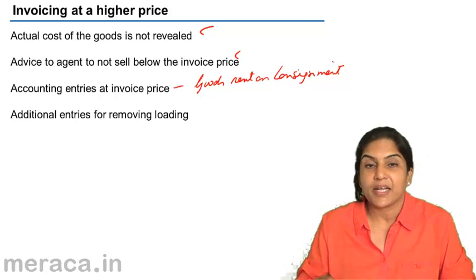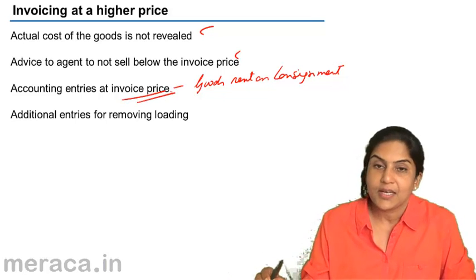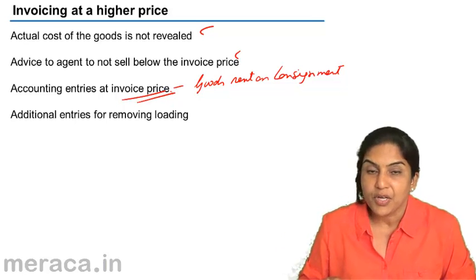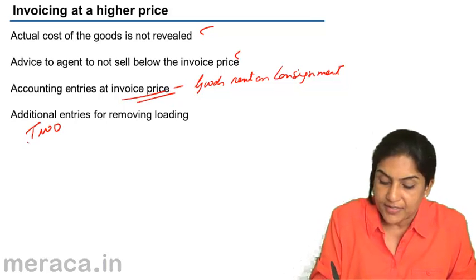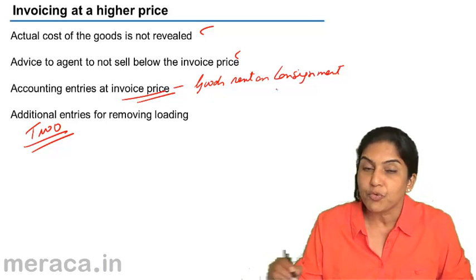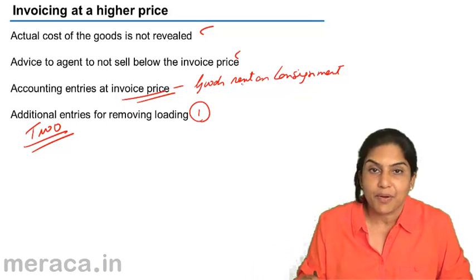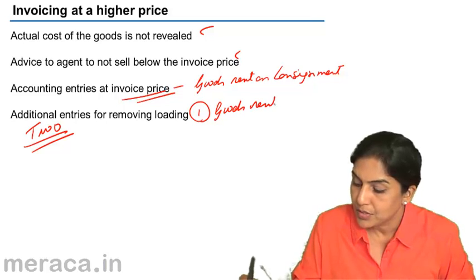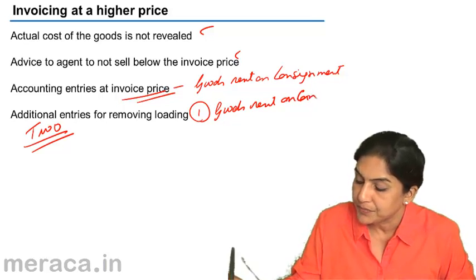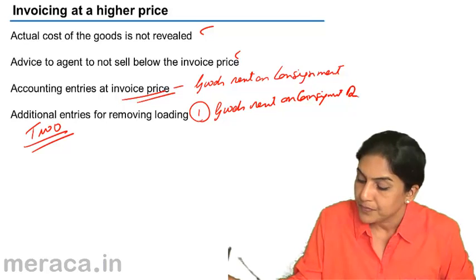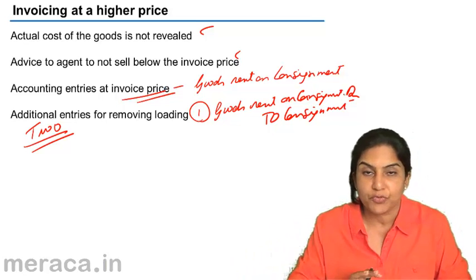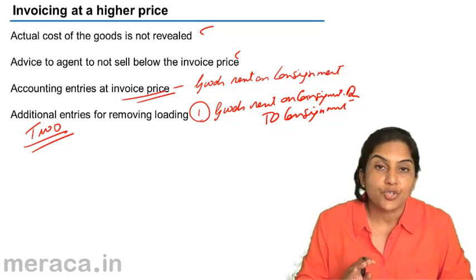Once the consignment account is prepared at the invoice price, while closing the consignment account and determining the actual profit on consignment, we pass two additional entries. One entry is to remove the effect of this loading — we reverse the above entry. When we sent the goods, we said consignment account debit to goods sent on consignment. Now we say goods sent on consignment account debit to consignment. In this manner, the effect of the loading — the higher cost — is removed, shown on the credit side, so that the true profit is reflected.